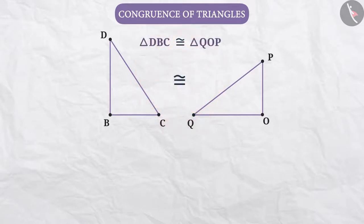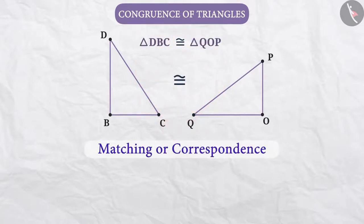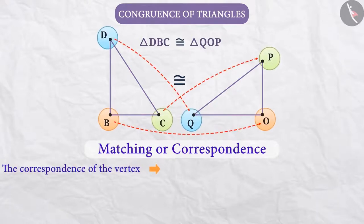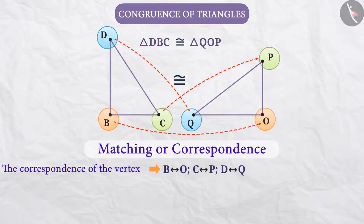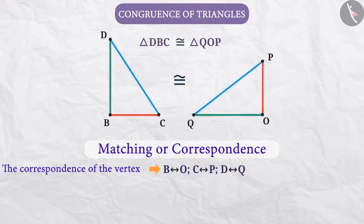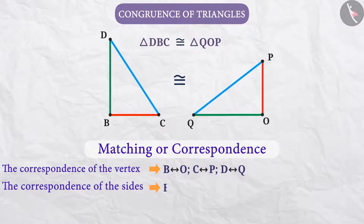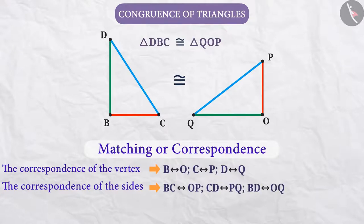In this way, in the context of congruency, we need to take care of matching or correspondence of the parts of the triangle. For example, here the correspondence of the vertices is as follows: B corresponds to O, C corresponds to P, D corresponds to Q. These are the vertices that cover each other completely. Similarly, here we can see the correspondence of the sides as well, which we will show as BC corresponds to OP, CD corresponds to PQ, and BD corresponds to OQ.